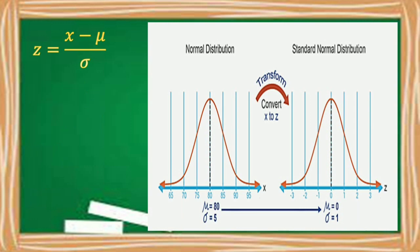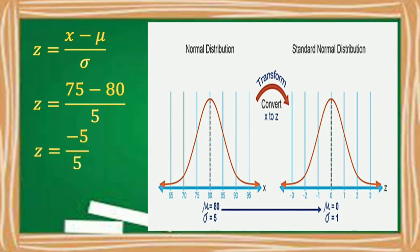If our normal variable x is 75, what would be its corresponding z-score? So 75 minus 80 divided by 5 is negative 5 divided by 5, which equals negative 1. Therefore, the corresponding z-score of 75 in the normal distribution is negative 1 in the standard normal distribution.